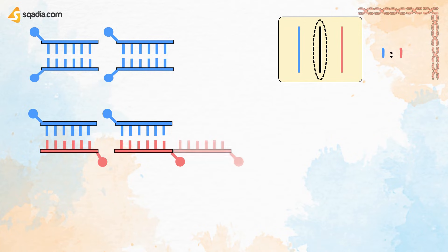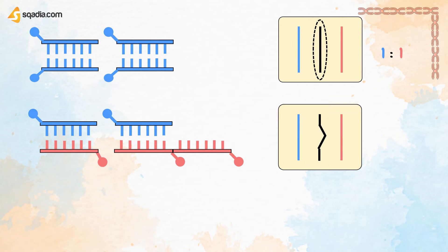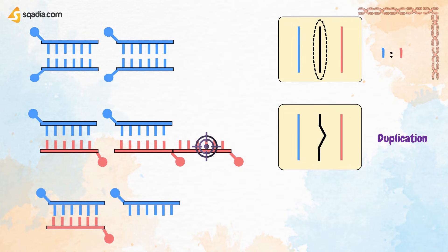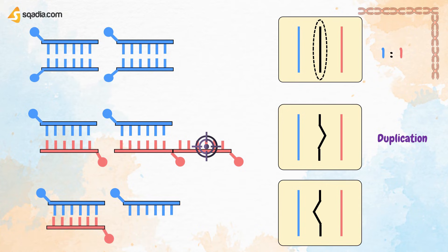If there was a duplication that caused the development of this diseased genome, the plot will be plotted indicating a duplication in the diseased genome. But if there was a deletion that caused the development of this diseased genome, the plot will then be plotted indicating a deletion in the diseased genome. This technique is extremely useful in detecting deletion and duplication.